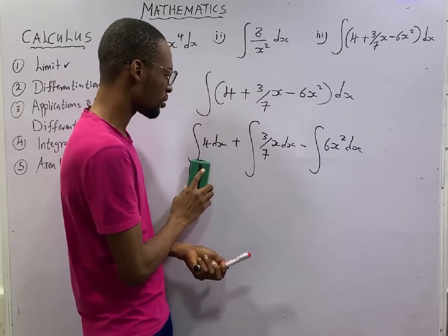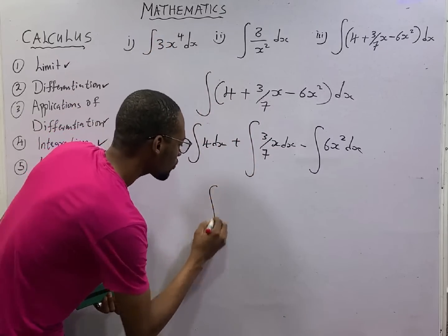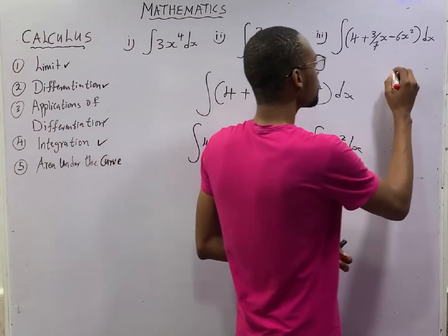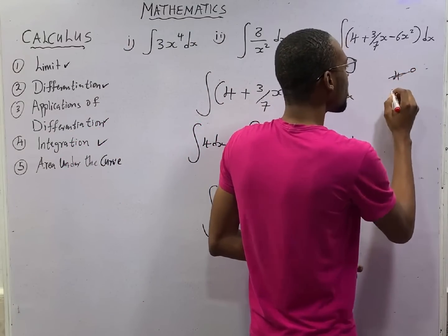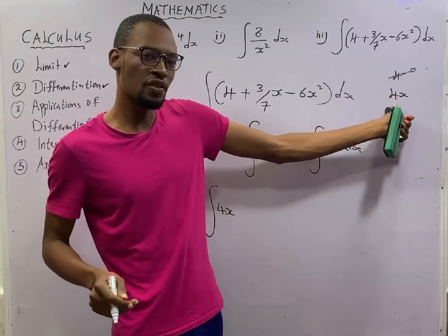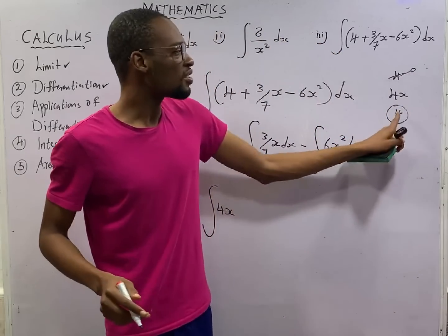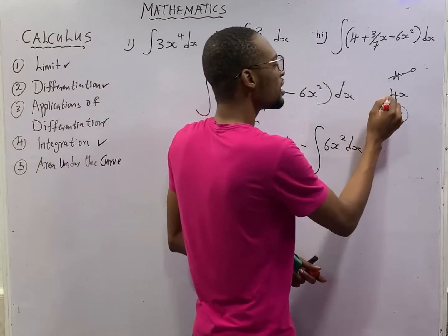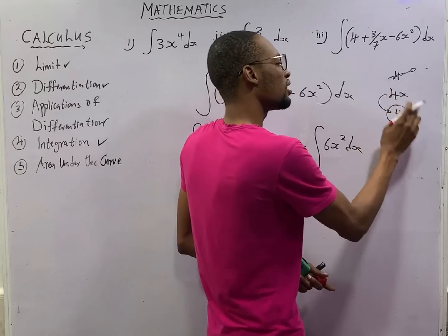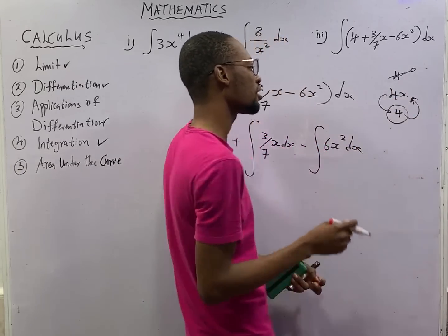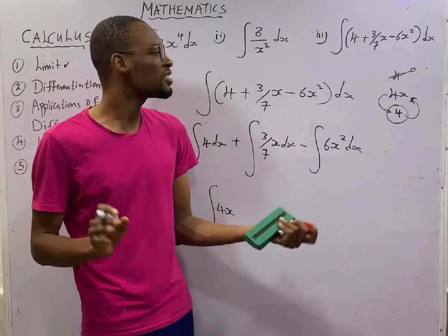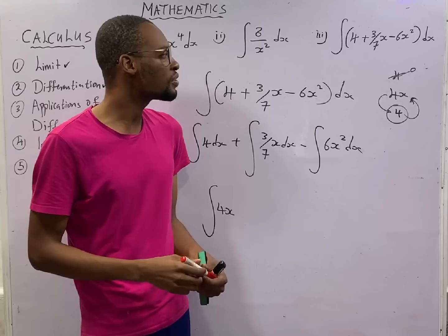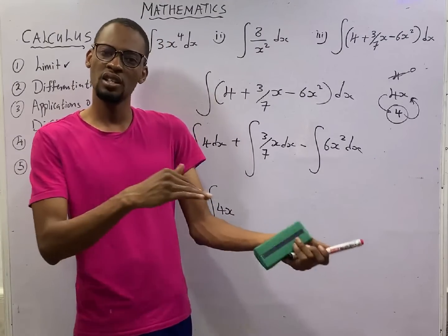So integrating this, when you integrate 4 you get 4s. Remember I told you that once you differentiate 4 you get 0. Now if you differentiate 4s you will get 4, so to get 4s back you must integrate 4 because integration is opposite of differentiation. When you integrate a constant add s to it. When you differentiate the constant it is 0, but when you integrate a constant it is not 0, you add the variable to it.